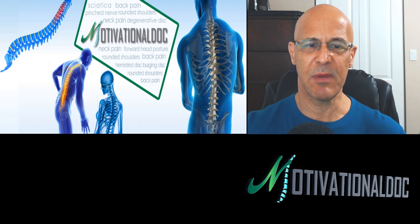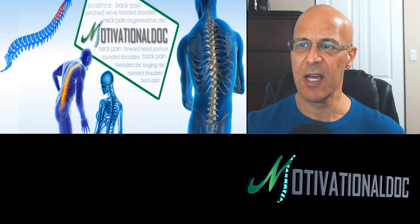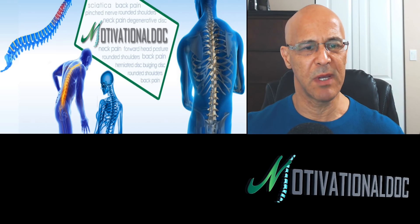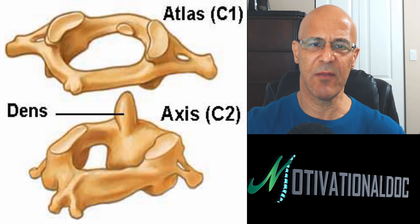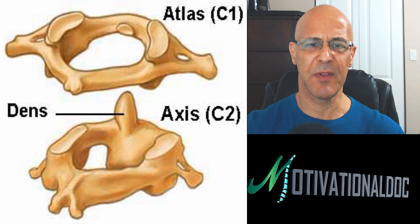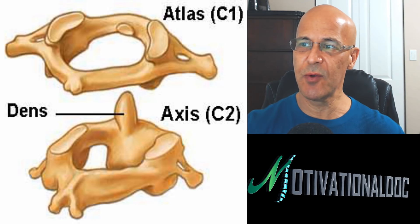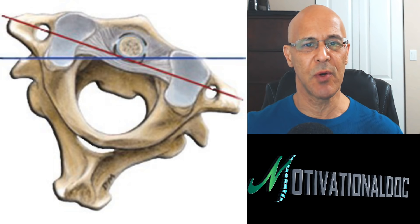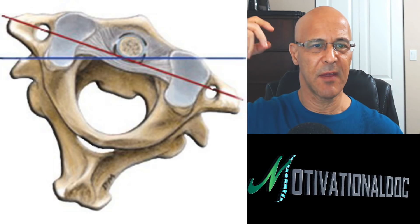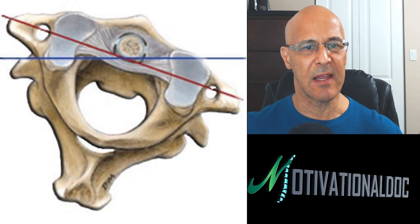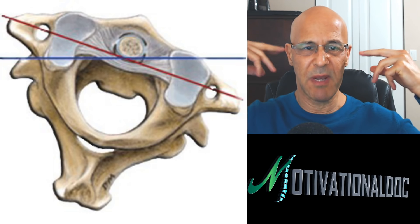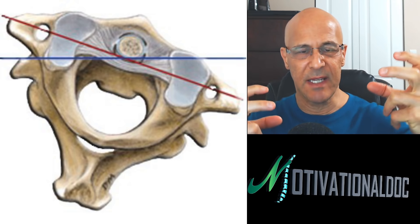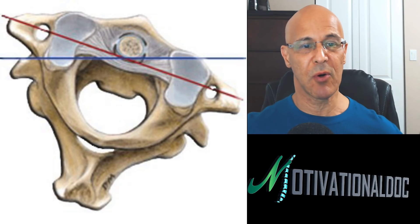We're going to teach you a little bit about the anatomy, the physiology, the biomechanics, and we'll go through this pretty briefly. The first thing is teaching you a little bit about the atlas and axis. The majority of all rotation that takes place within the neck occurs between the atlas and axis — between the first two vertebrae of the cervical spine. The atlas is the top vertebra, the axis being the second vertebra, and all the dynamic motion occurs in that upper neck area.